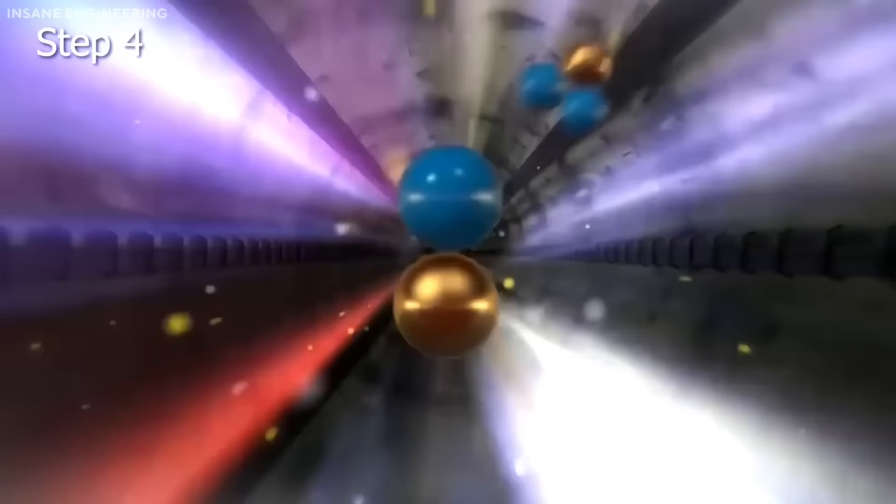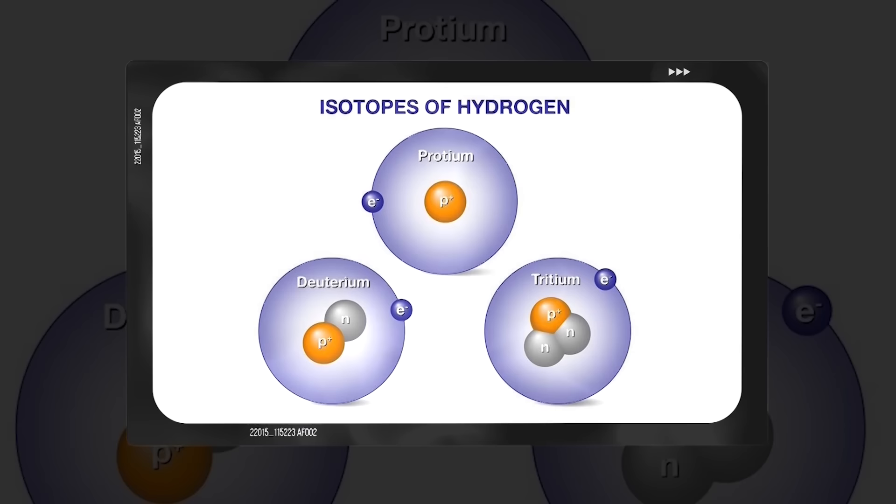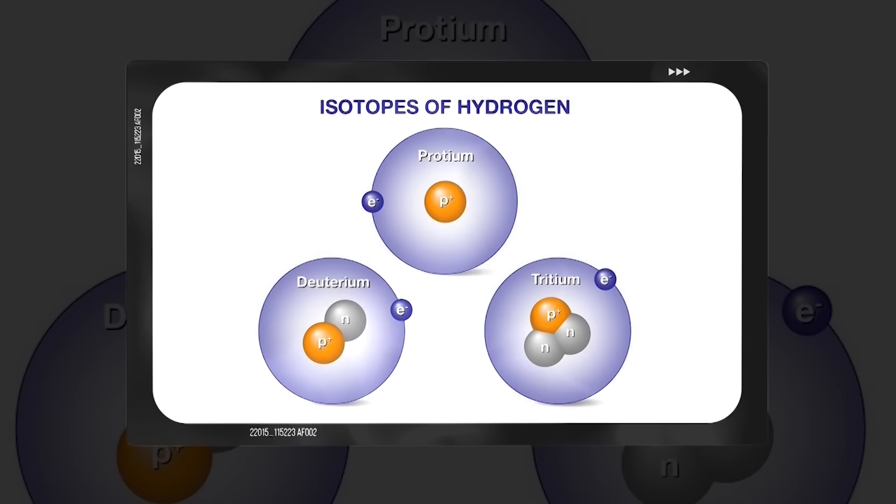The ITER tokamak will use a mixture of deuterium and tritium, two isotopes of hydrogen, as the fusion fuel. Deuterium is abundant in nature, while tritium will be produced by the ITER reactor itself, by using lithium blankets that surround the plasma and absorb the neutrons generated by the fusion reactions.